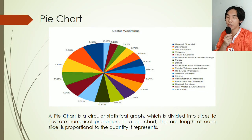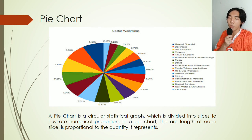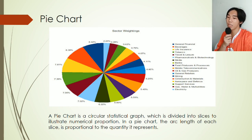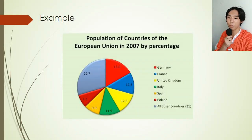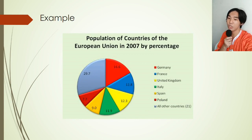Lastly, we have pie chart. A pie chart is a circular statistical graph which is divided into slices to illustrate numerical proportions. The arc length of each slice is proportional to the quantity it represents. For example, pizza or pie are perfect representations of pie charts, which are commonly used in budgeting, time spent in a day, or time management plans.